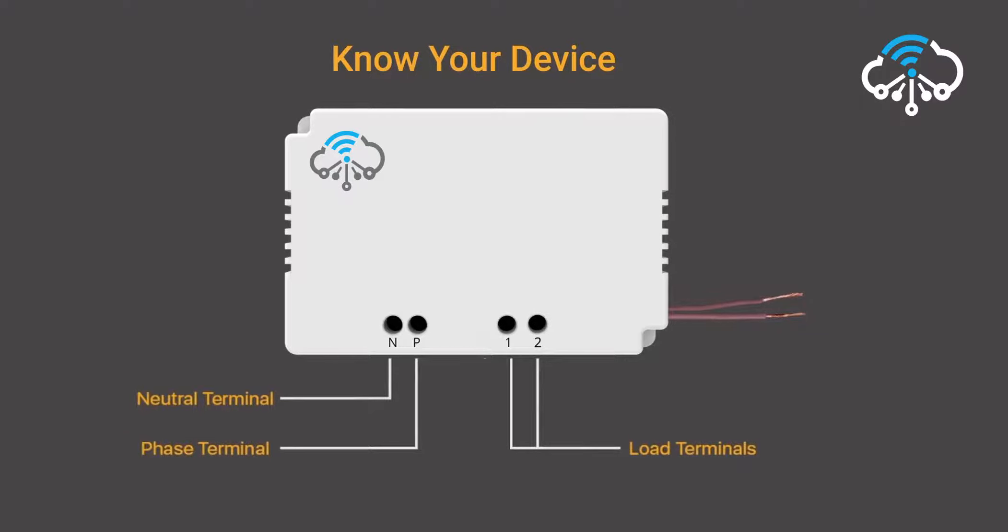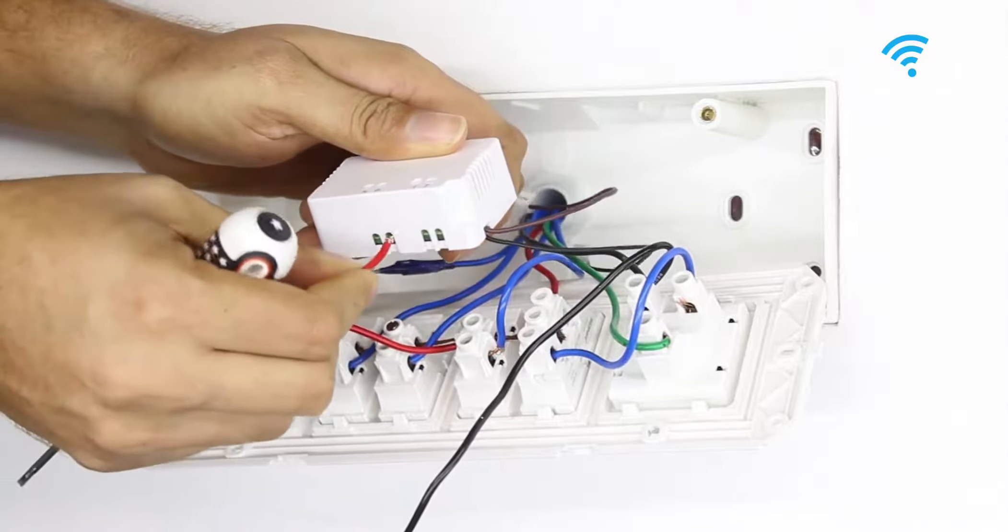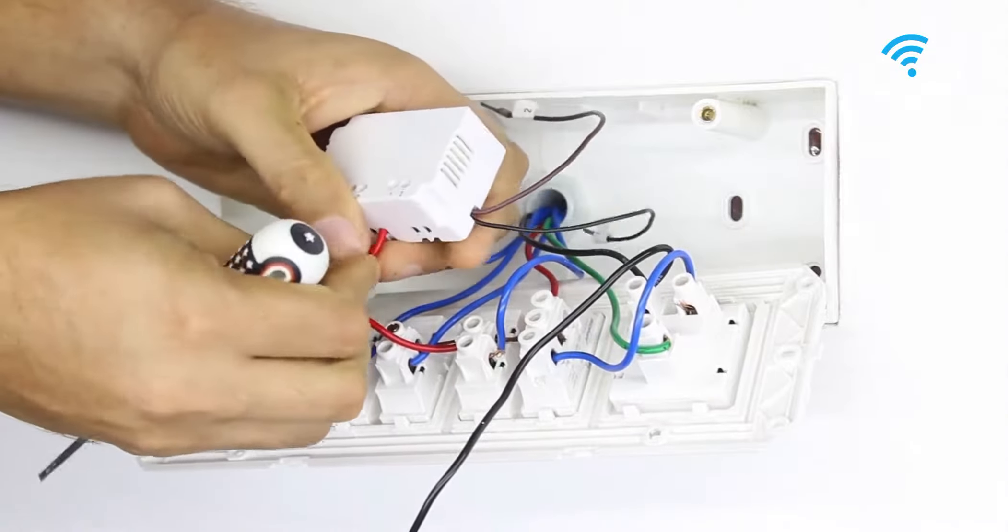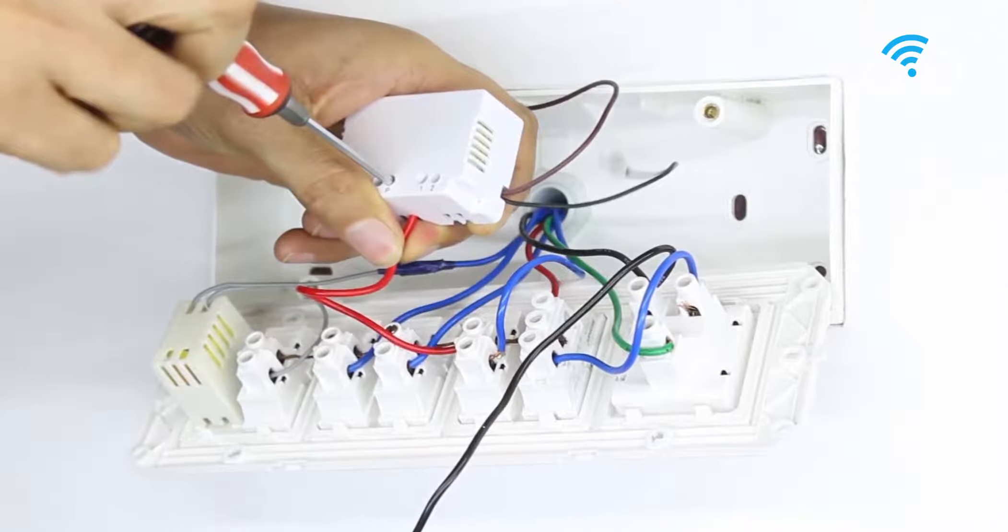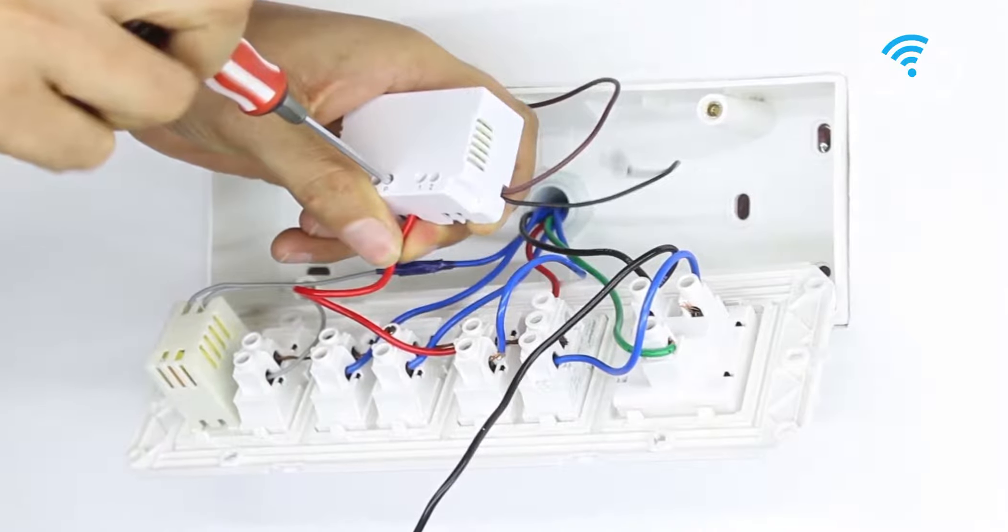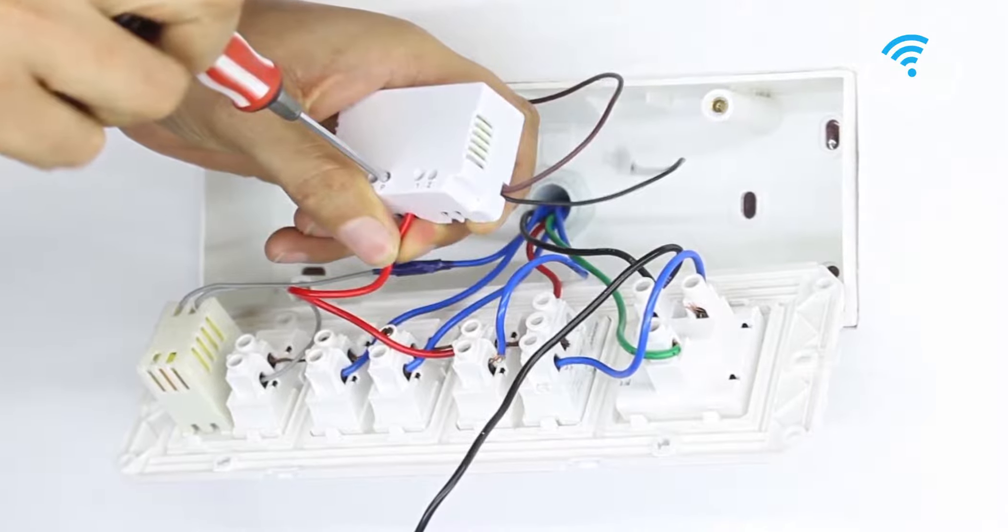The virtual wires 1 and 2 are the wires that will replace the load wires at the corresponding load pin inside the switchboard. Draw a phase wire and connect it to the slot marked as P on the device. Also ensure that only one phase wire is connected to the device. Do not under any circumstance connect multiple phase wires from appliances and inverters to the device.